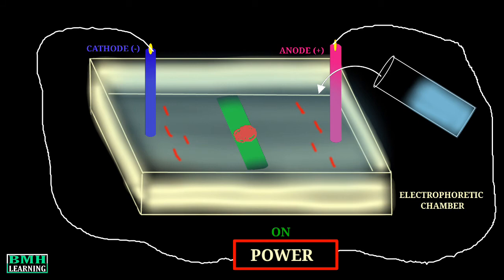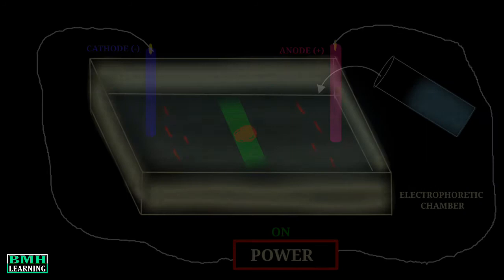And after some time, you would see the bands of separated components at their respective locations according to their charges. This way the particles will be separated. Now the supporting medium on which or through which a particle will travel can be any of the following. It can be paper, and that would be called paper electrophoresis. The movement can be supported by a cellulose acetate membrane.